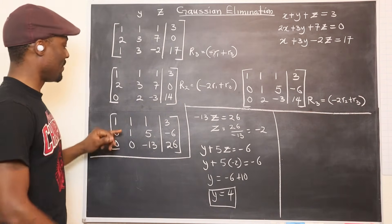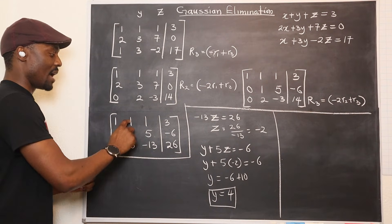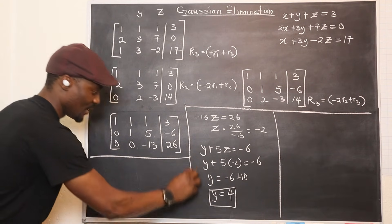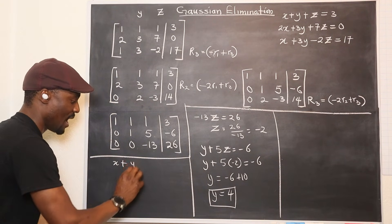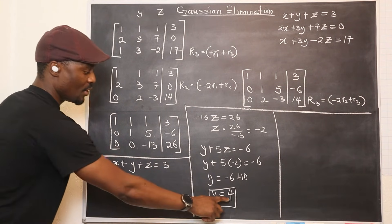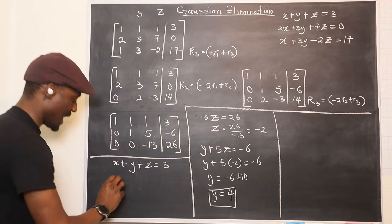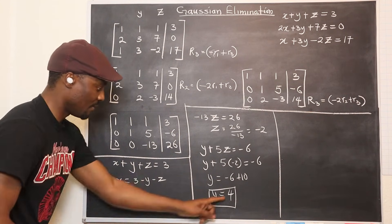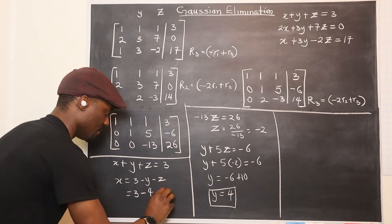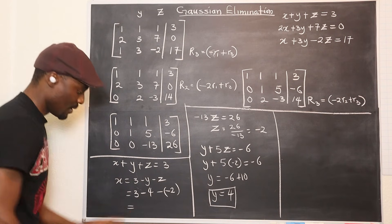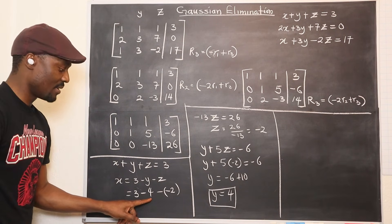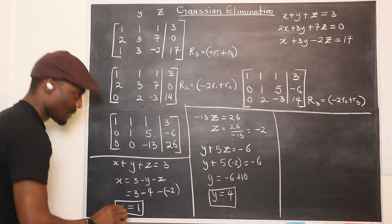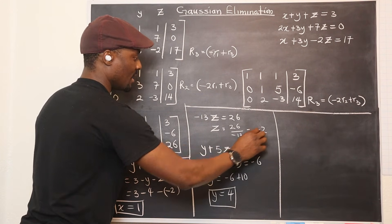Then you want to get x — you can come to the very first equation: x plus y plus z equals three, which is one x plus one y plus one z equals three. We already know y to be four and z to be negative two. So x will be equal to three minus y minus z, which is three minus four minus negative two. Three minus four is negative one, and negative one plus two gives us one. So x equals one, y equals four, and z equals negative two.